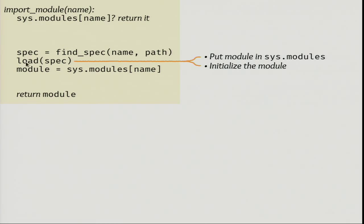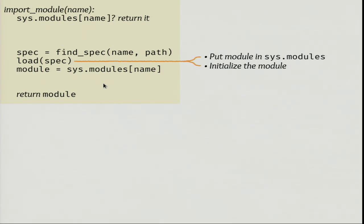The next step is the actual loading. What happens here is an empty module object is put in `sys.modules`, and after that it's initialized. It's important this is done in this exact order: first it's put in `sys.modules`, and after that it's initialized and all the functions and classes get assigned to it. After that, the machinery looks in `sys.modules` and returns whatever it finds there. This is a simplification, but you can already use it to solve real-world problems.